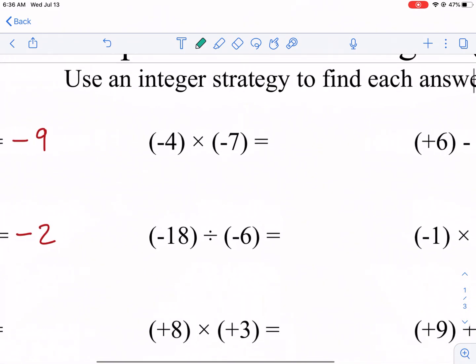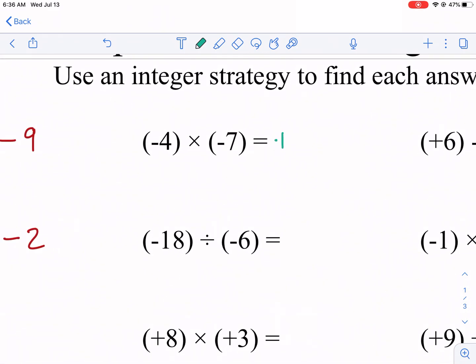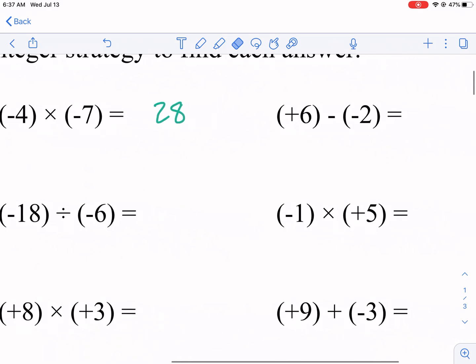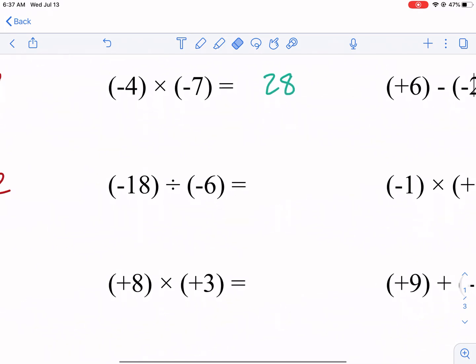Let's go ahead and get to those. Number two, I think, is multiplication. We have a negative times a negative. That's going to be a positive. And then four times seven is 28. Do we need to write the plus sign in front of a positive number? We do not. We just put 28 and we're done.